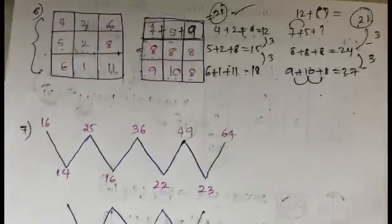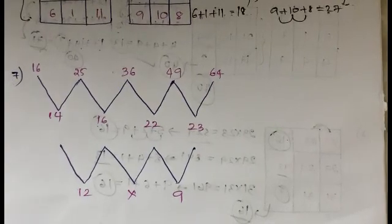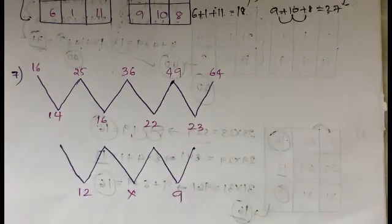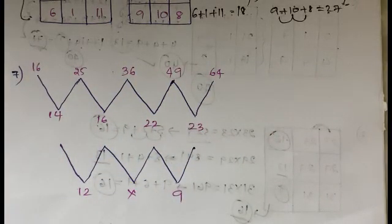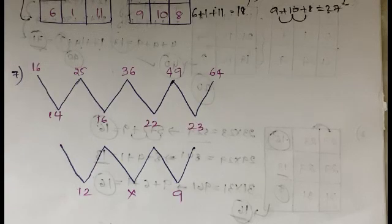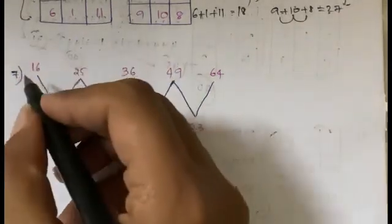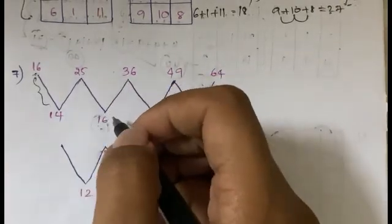The seventh problem is a new type — you're not given any boxes or squares, just numbers arranged randomly. On seeing the numbers, the first idea most people get is: are these 4², 5², 6², 7², 8²? Maybe, but let's explore. Also note — the method I'm using is not the only way; you can use any other method. For 16 and 14, you need to figure out a relationship, and similarly for 25 and 16.